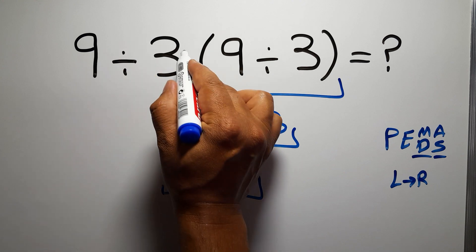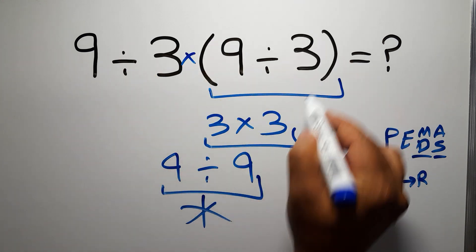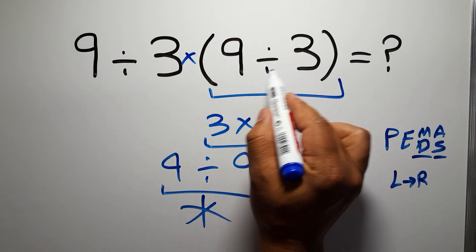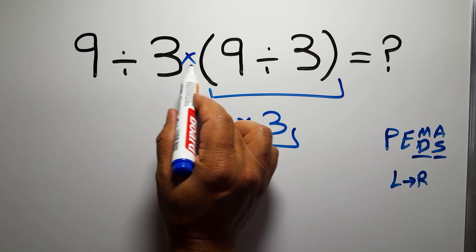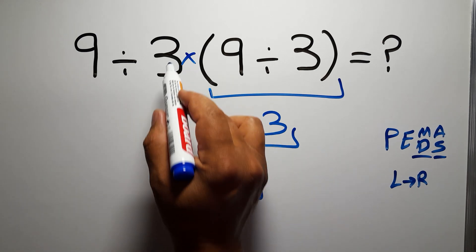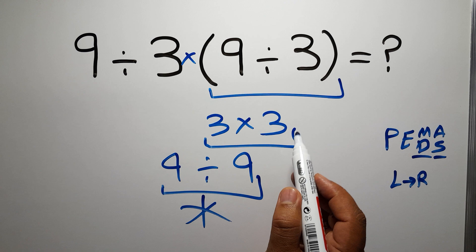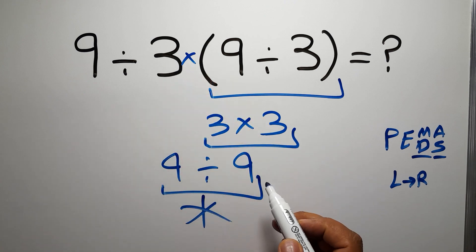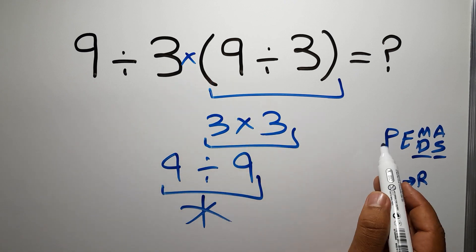In this expression we have one division, one multiplication, and one parentheses. Inside this parentheses we have one division. Here we have a multiplication because in mathematics when a number is placed next to parentheses it means multiplication.